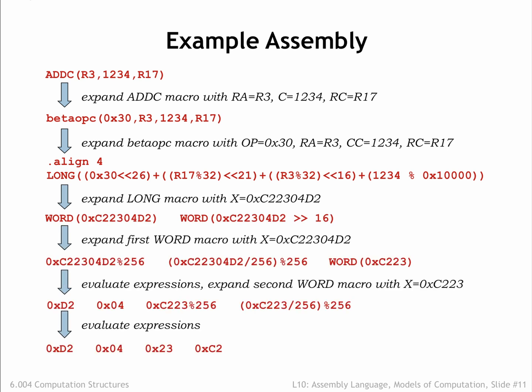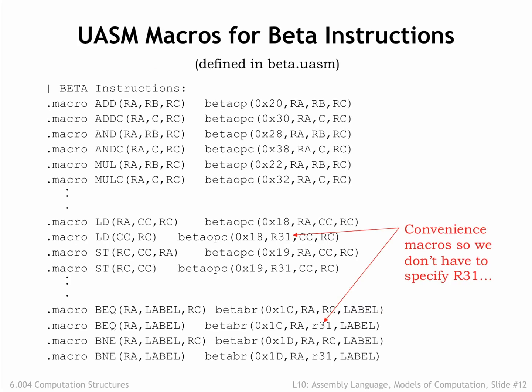You can see that the knowledge of beta instruction formats and opcode values is built into the bodies of the macro definitions. The UASM processing is actually quite general. With a different set of macro definitions, it could process assembly language programs for almost any ISA. All the macro definitions for the beta ISA are provided in the beta.UASM file, which is included in each of the assembly language lab assignments.